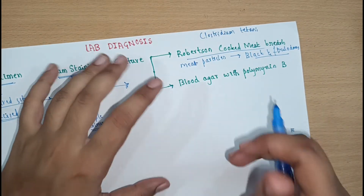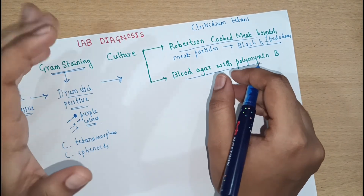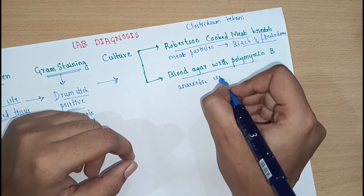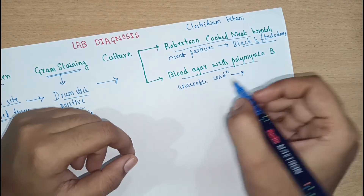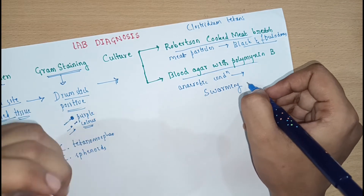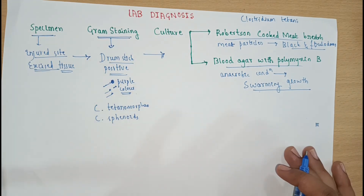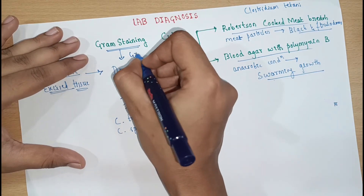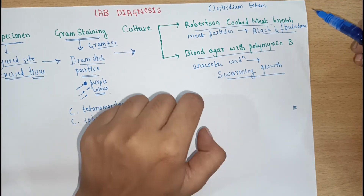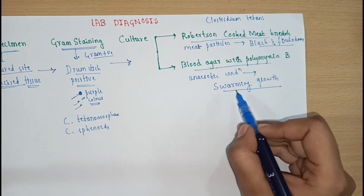Another culture method uses blood agar with polymyxin B. These plates are incubated at 37°C for 20 to 48 hours under anaerobic conditions. If the specimen contains Clostridium tetani, there is a characteristic swarming growth on the plates, which is also confirmatory. In summary for lab diagnosis: collect specimen from the injured site, send for gram staining — gram-positive bacilli with drumstick appearance; culture on RCMB — meat turns black with foul odor; or blood agar with polymyxin B — characteristic swarming growth.